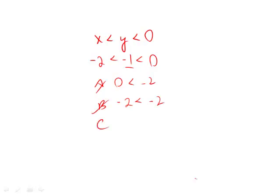C, x, which is negative 2, times y squared, which is negative 1 squared, which is 1. Is that less than x? Well, x is negative 2. This side is also negative 2. Nope, because those two equal each other.